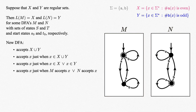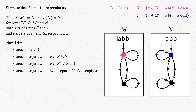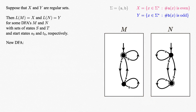For example, let's run the string x equals a, b, a, b through both machines. It's accepted by m and rejected by n, so we want to accept that string. On the other hand, for x equals a, b, b, both machines reject it, so we want to reject that string. The only snag is that we need a single DFA that somehow runs both m and n simultaneously on the same input string.